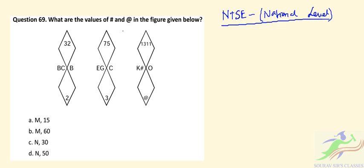We need to find the values of the particular symbols hash (#), at the rate (@), and percent (%) in the figure given below. We have figure one, figure two, and figure three. We have five options given to find the correct one.